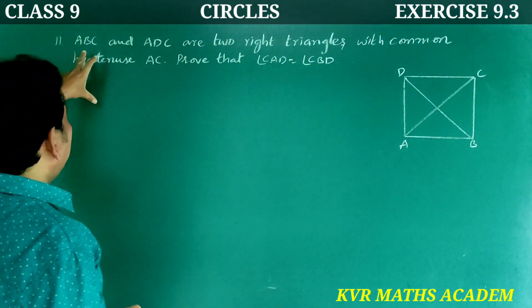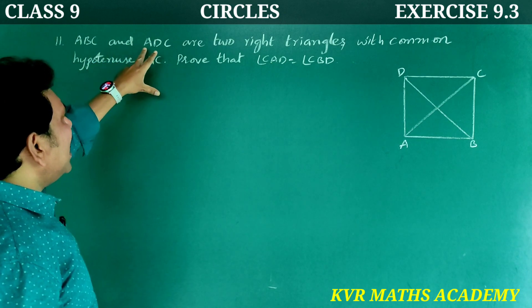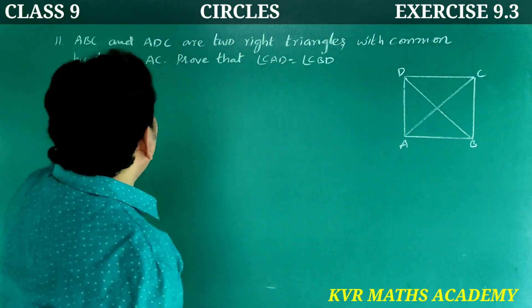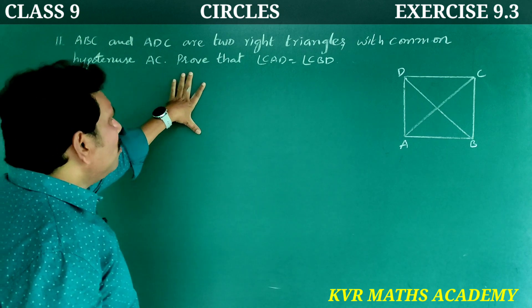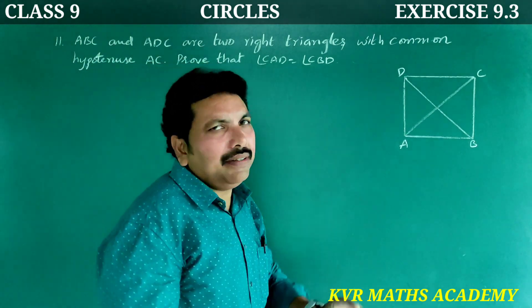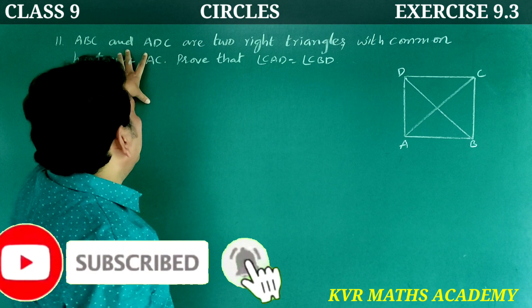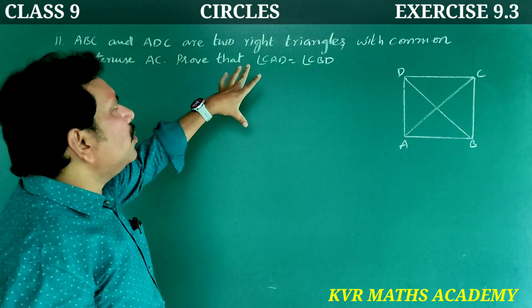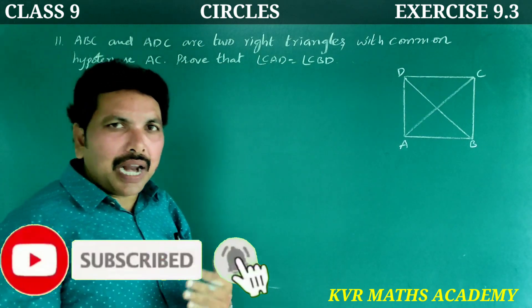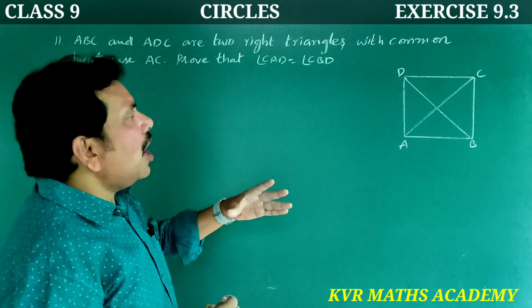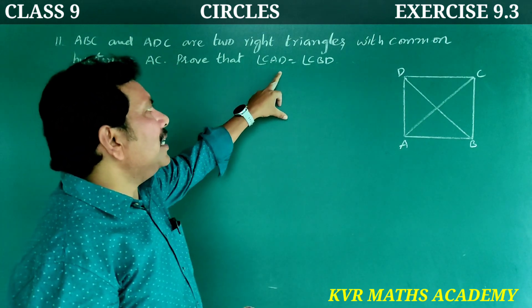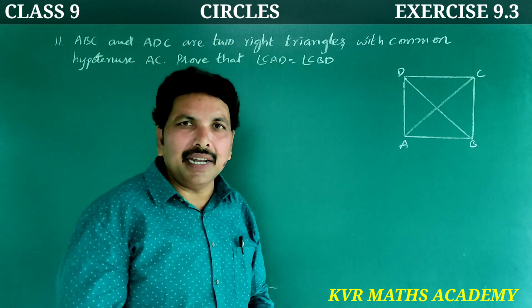This is the 11th question. ABC and ADC are two right triangles with common hypotenuse AC. Prove that angle CAD is equal to angle CBD.